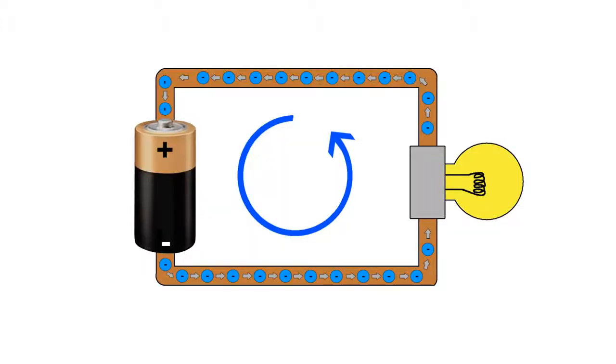Alright, now is the perfect time to talk about electric circuits. An electric circuit is a closed loop where current can flow around. In this example of a flashlight, electrons can flow from the battery, through the copper wire, through the light and through another piece of wire to the other side of the battery.